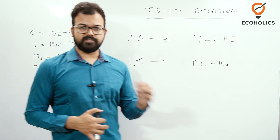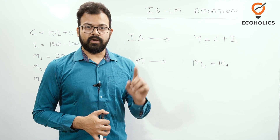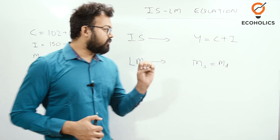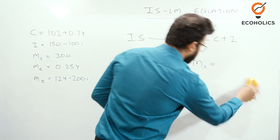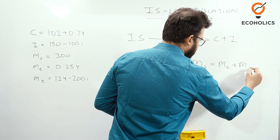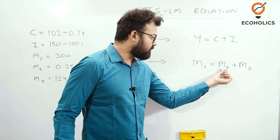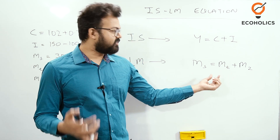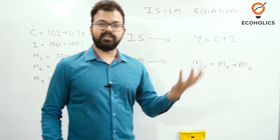Now, if you remember the Keynesian theory discussed in previous videos, there are three types of demand for money under the Keynesian model: transactional demand, precautionary demand, and speculative demand. We can split money demand (Md) into Mt and Mz — using Z because S is already taken for money supply. Transactional and precautionary motives are clubbed together as Mt, since precautionary motive is very rare, and Mz is the speculative demand for money.